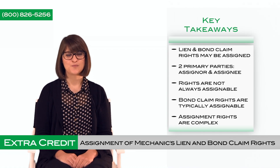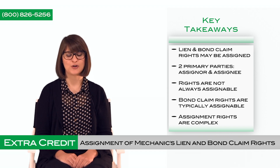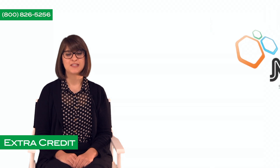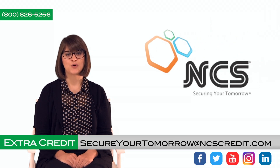Key takeaways: One, mechanics lien and bond claim rights may be assigned from one party to another. Two, there are two primary parties — the assigner and the assignee. Three, rights are not always assignable. Four, bonds are typically assignable. And five, assignment rights are complex and vary by state and circumstance. Be aware the variables affecting assignments of rights are complicated. Please contact NCS if we or our nationwide network of attorneys may be of assistance. Thank you for watching and have a great day.